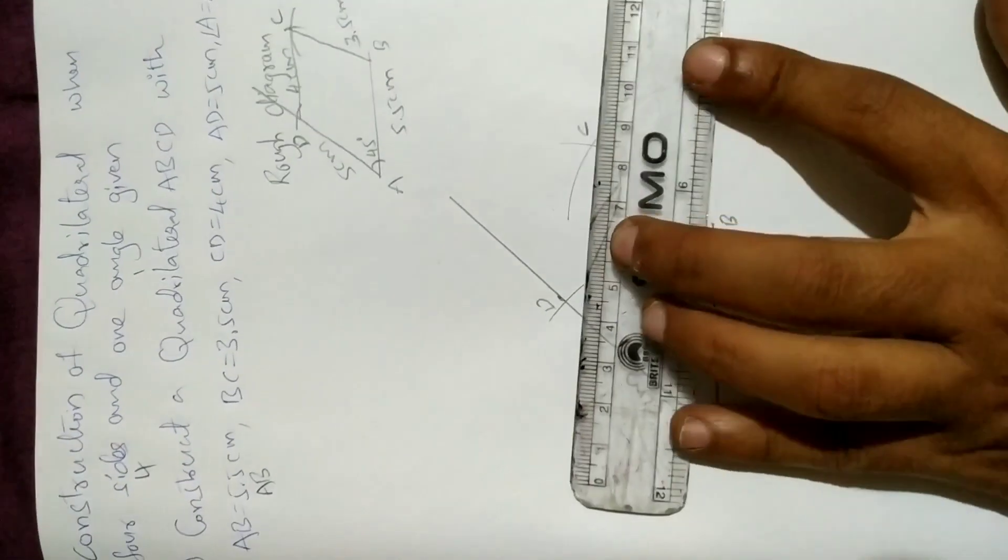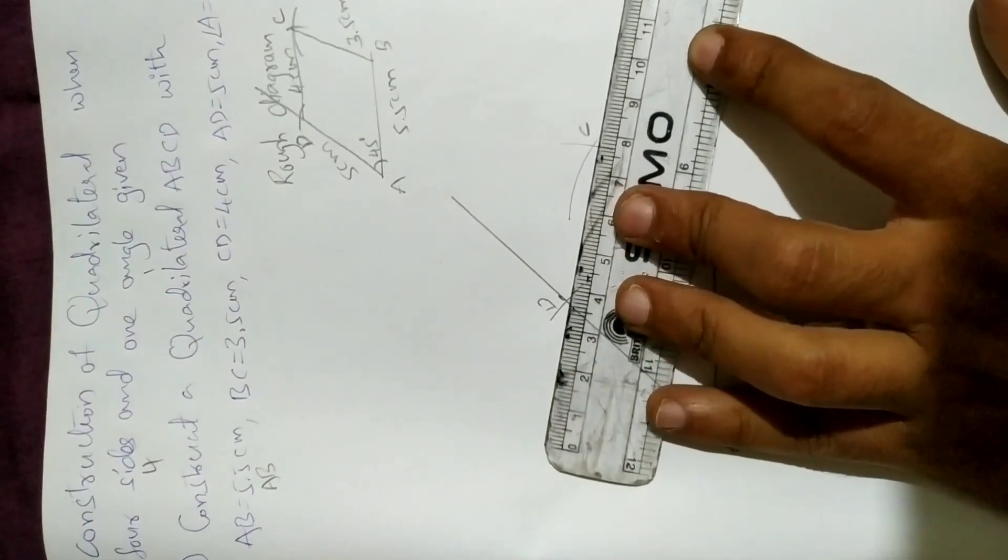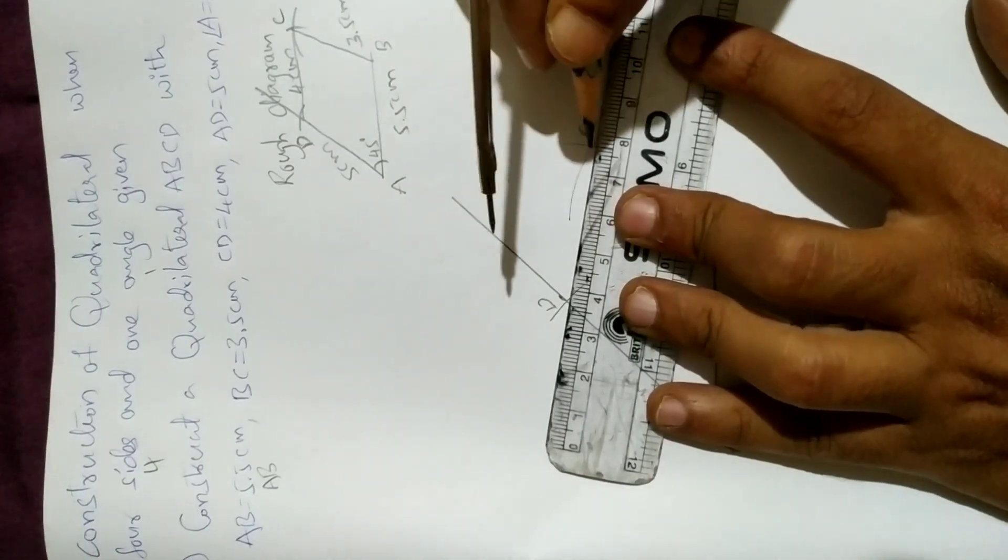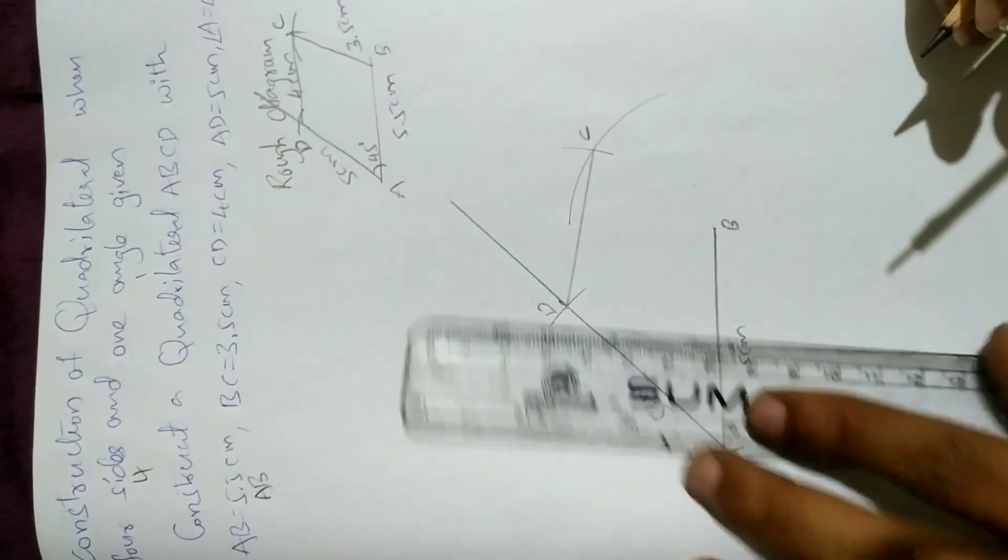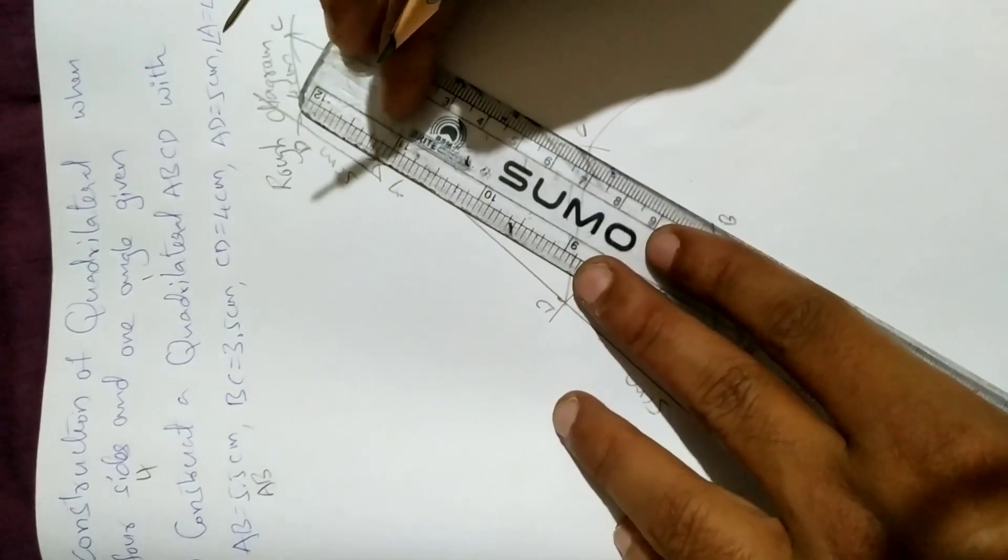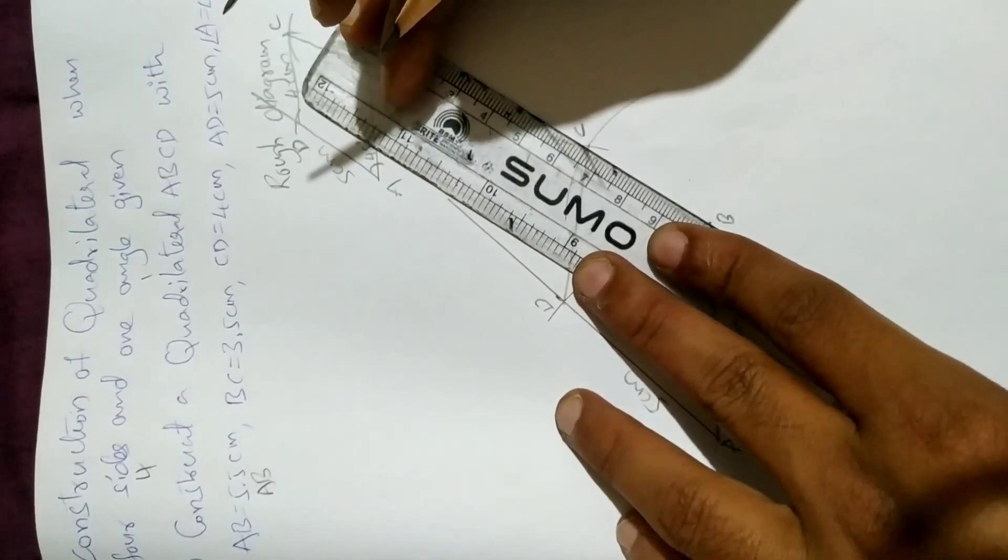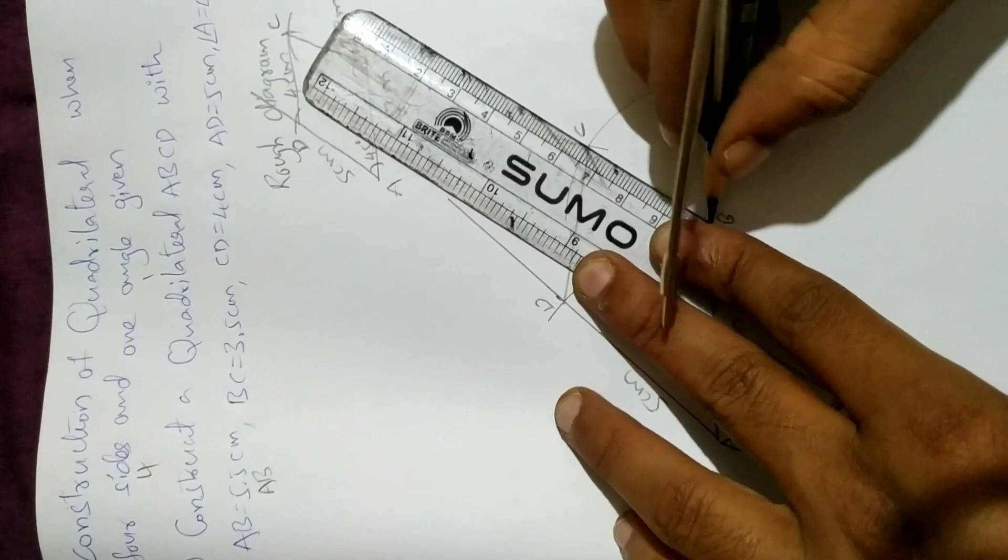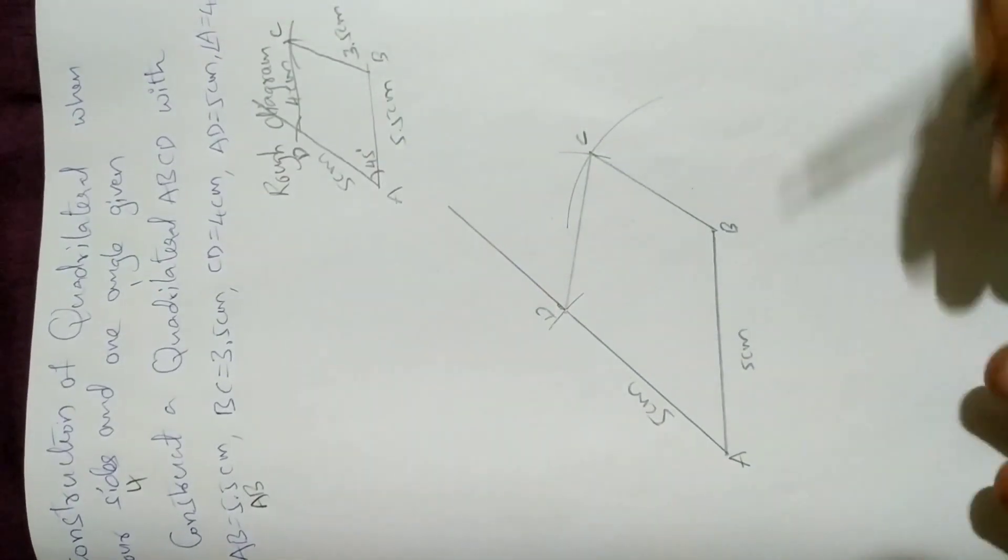Now let us join DC. Join DC and BC. So our construction is finished.